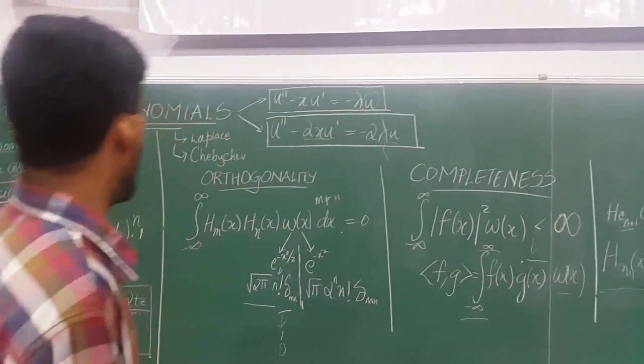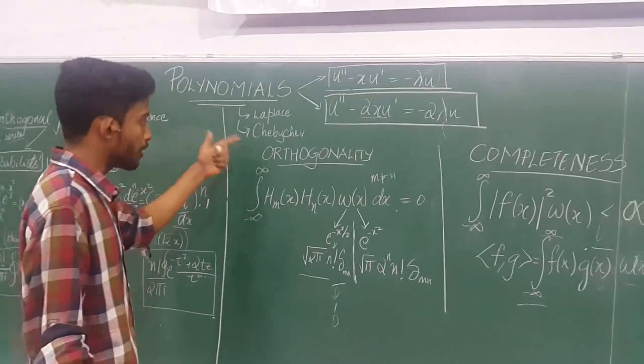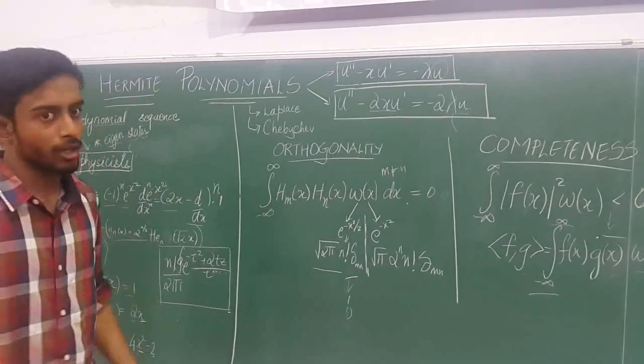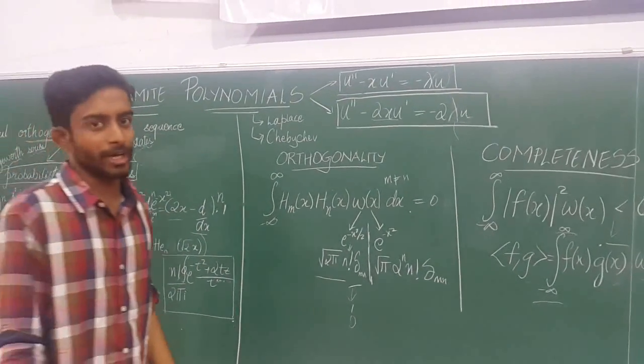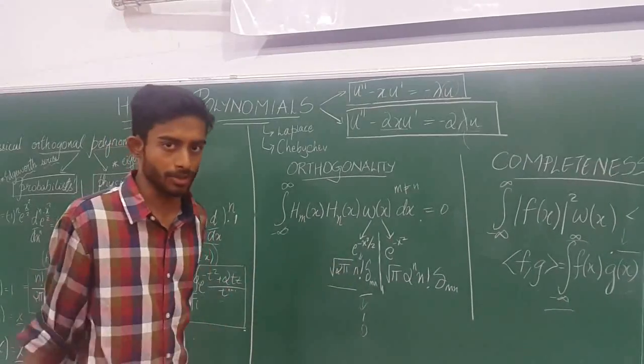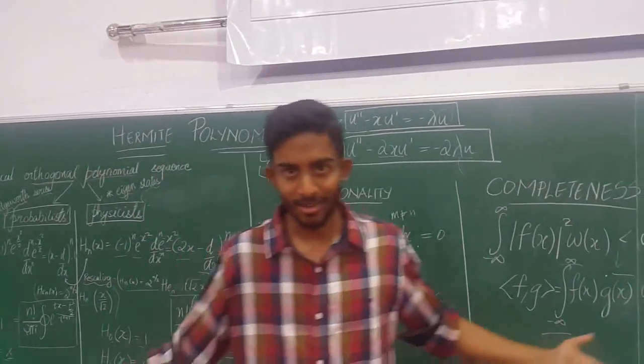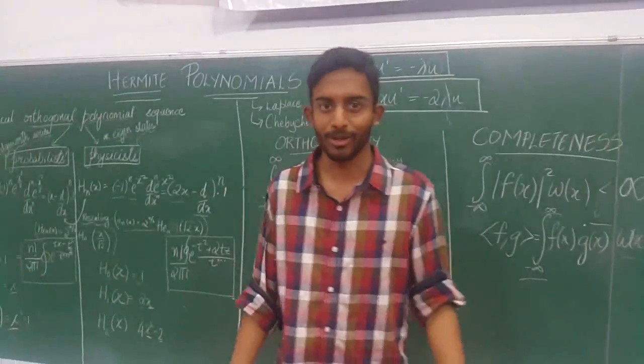Hermite polynomials were started by Laplace and developed by Chebyshev, but finalized by Hermite, and they are named Hermite polynomials.